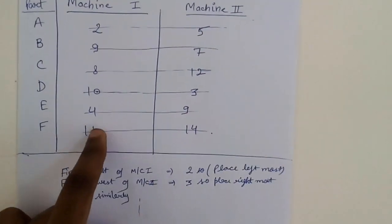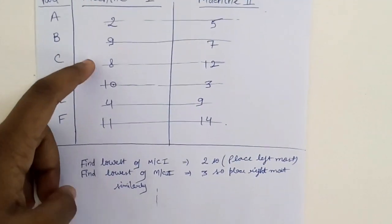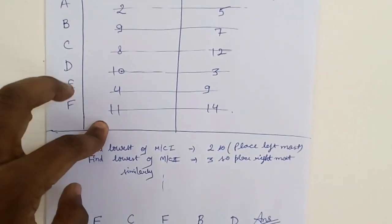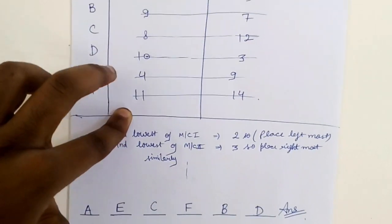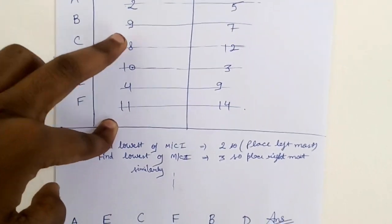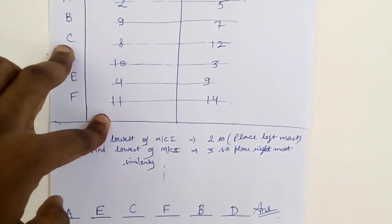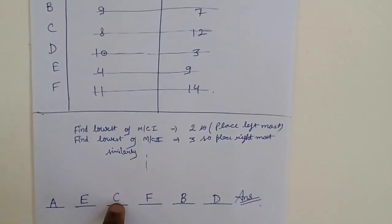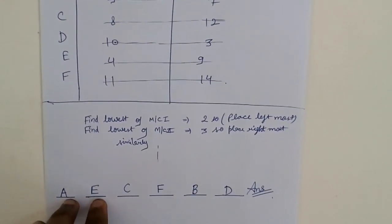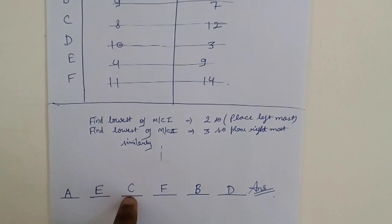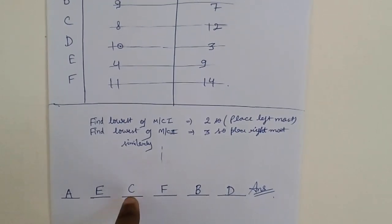Eight and eleven will be remaining, all others are striked off. Eight is minimum, so corresponding to eight you write C in the leftmost blank space. The only remaining part is F, so you write F here.